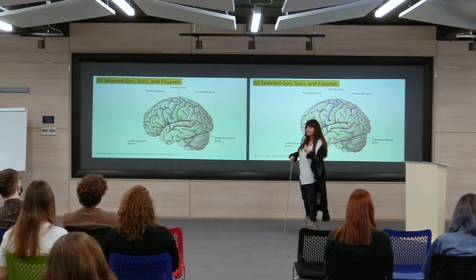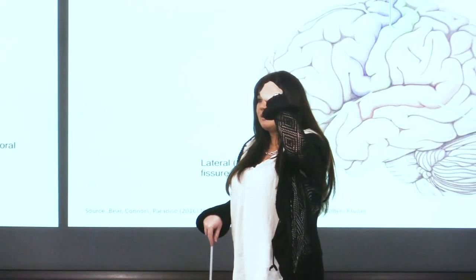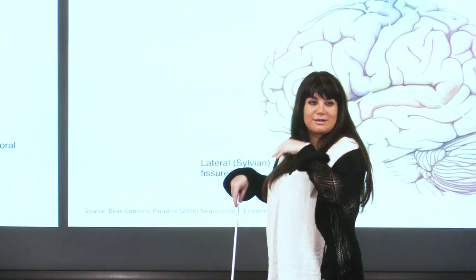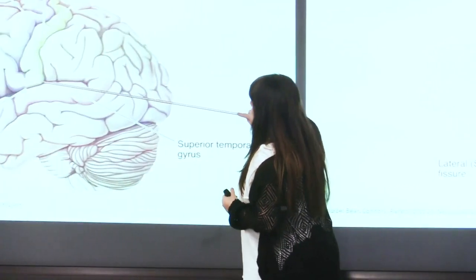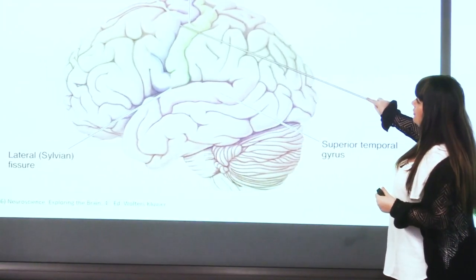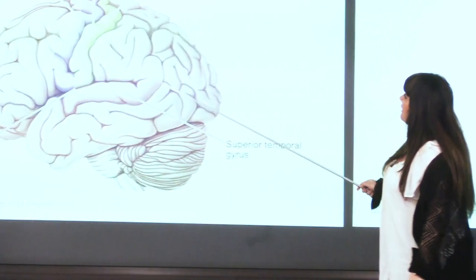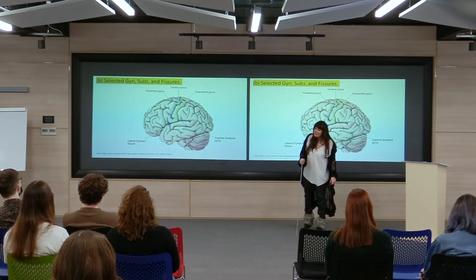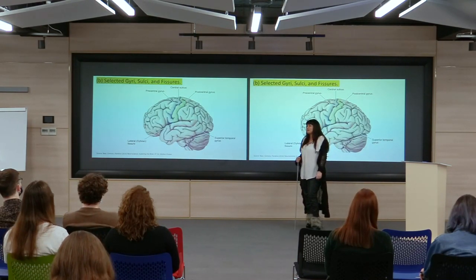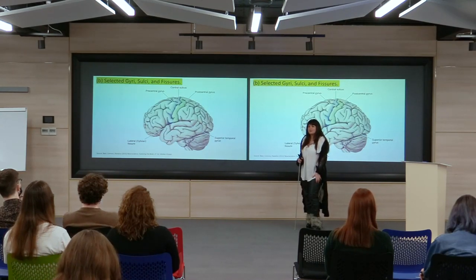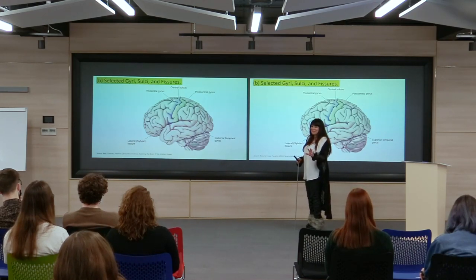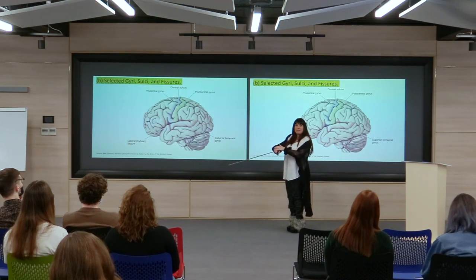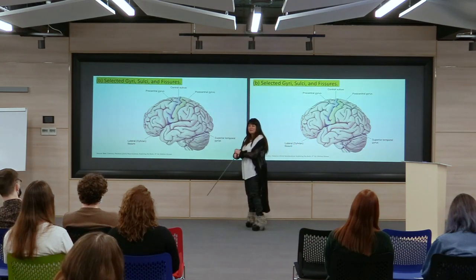The precentral gyrus is important for voluntary movement. Experiments were done where electrodes were introduced into this area in animals, and depending on the area of stimulation, the related body part moved as a result of electrical stimulation — giving great insights into motor skills. The postcentral gyrus is important for somatosensation — the neuroscientific term for the sense of touch, which encompasses temperature, texture, softness, and other complex sensations.